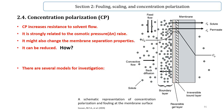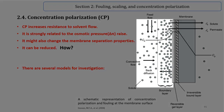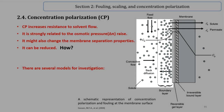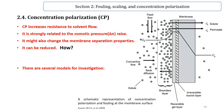As a consequence, a diffusive flux of solute back to the feed bulk appears. The solute builds up at the membrane surface until the equilibrium between diffusive and convective solute fluxes is attained. As a result, the solute concentration changes from a maximum at the membrane surface to the bulk, as illustrated in this figure. This phenomenon is known as concentration polarization.